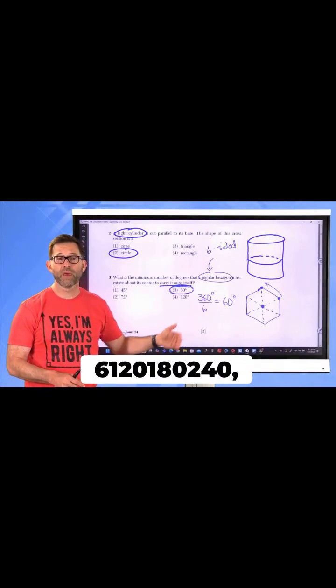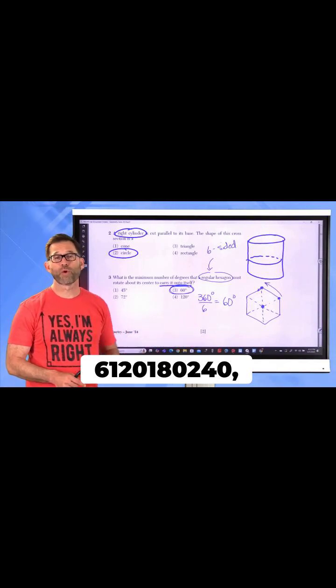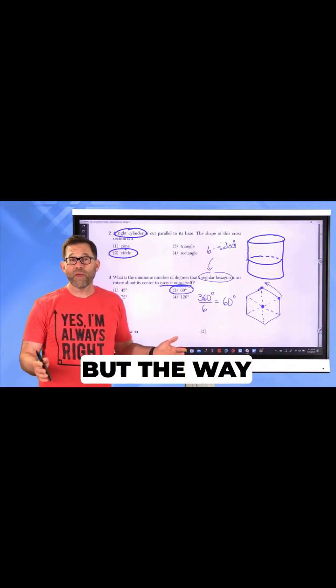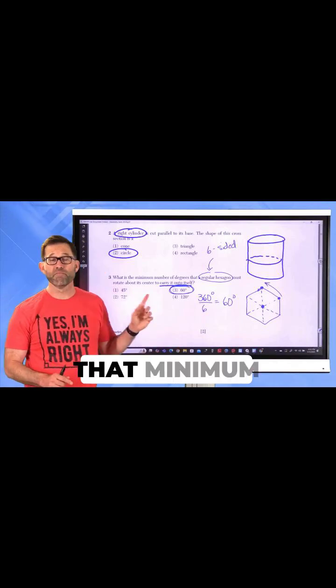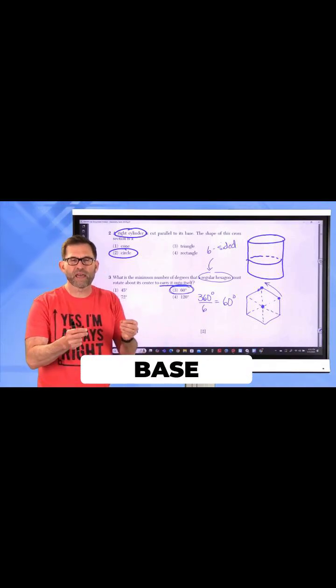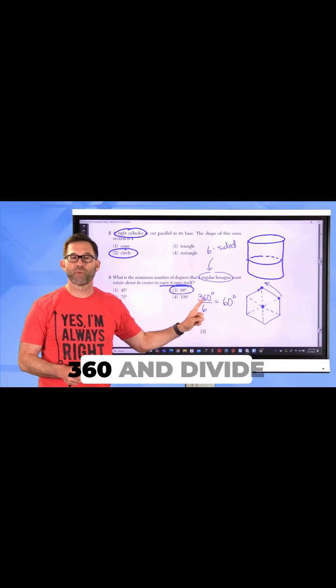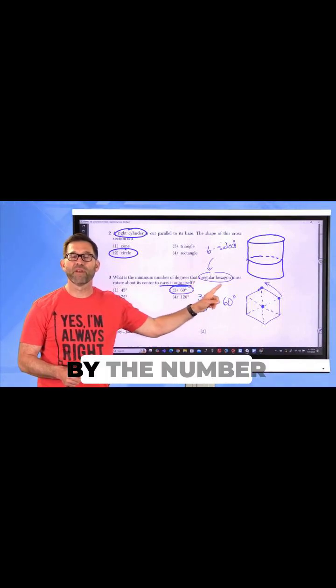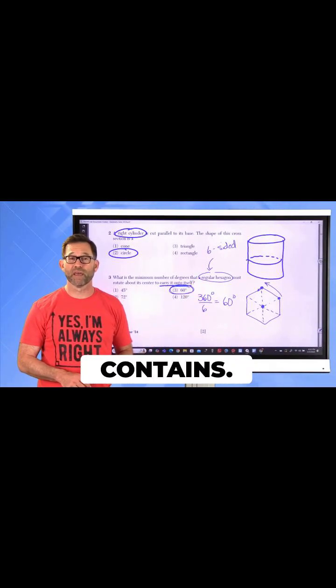so 60, 120, 180, 240, etc. But the way that we can always find that minimum angle, that sort of base angle, if you will, is by taking 360 and dividing by the number of sides that the regular polygon contains.